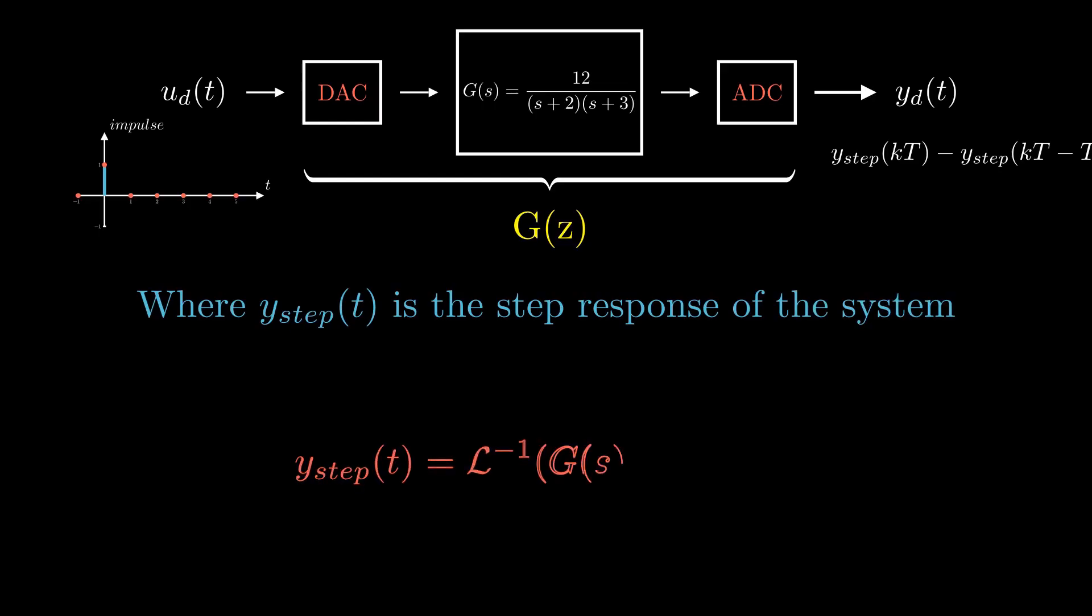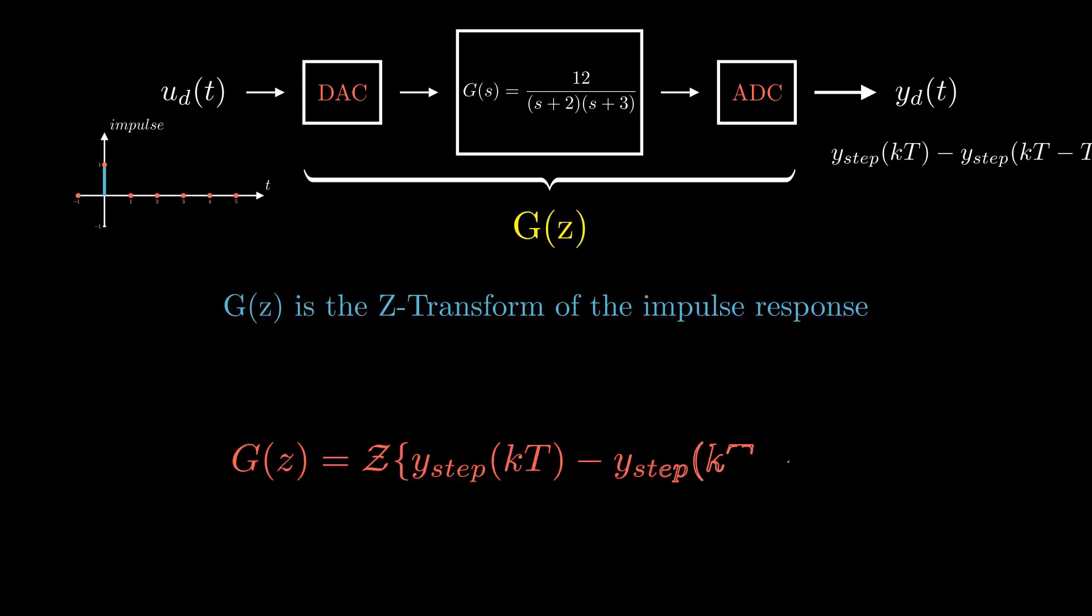We can find y_step(t) by taking Laplace inverse of G(s) times u_step(s), where u_step(s) is the Laplace transform of u_step(t) and it is 1 over s. To find y_step(t), we can take Laplace inverse of G(s) divided by s at t equals kT.